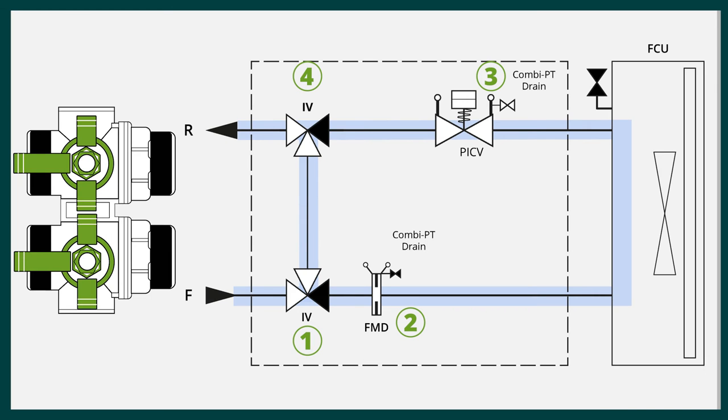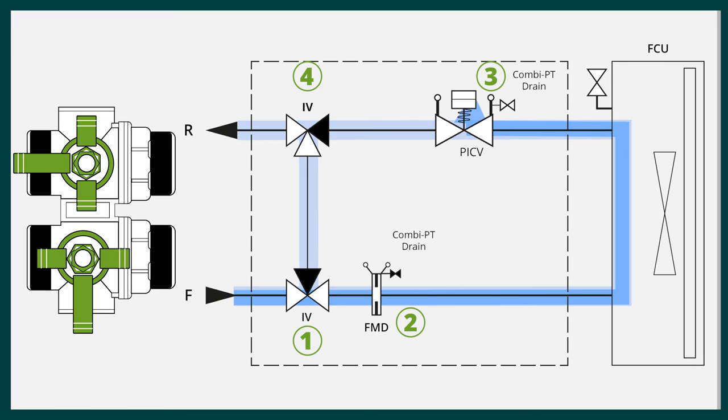Connect Hose to Hose Drain 3, then open Hose Drain 3, slowly open Bypass Valve 1 and flush to External Drain. Once the forward flush of the fan coil unit is complete, close Bypass Valve 1.